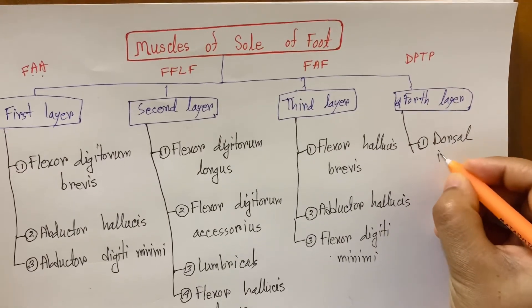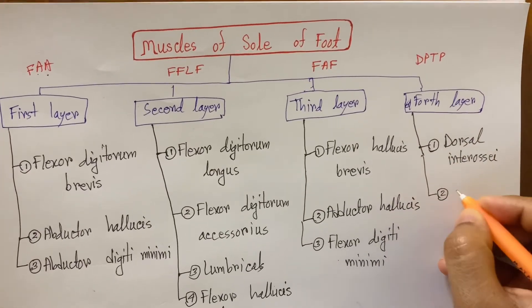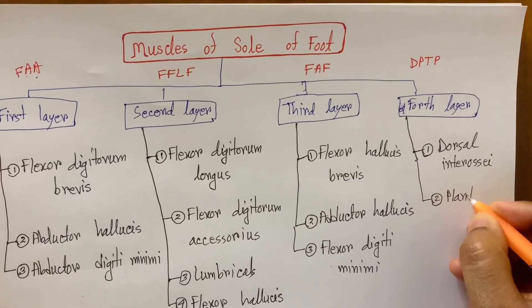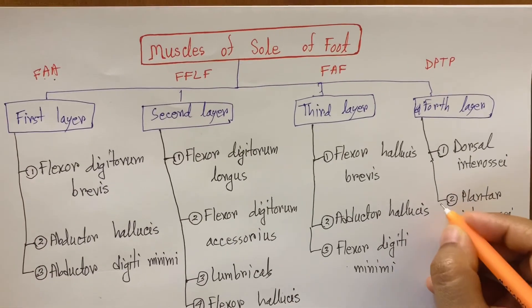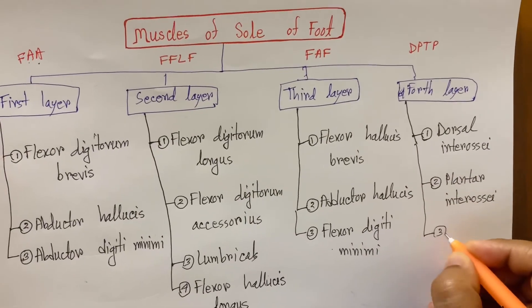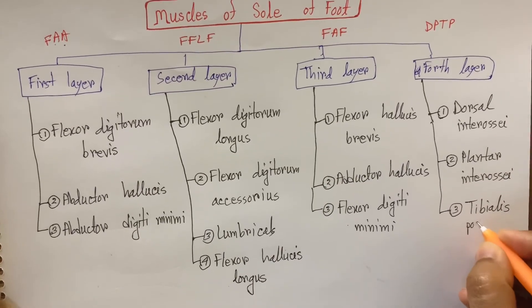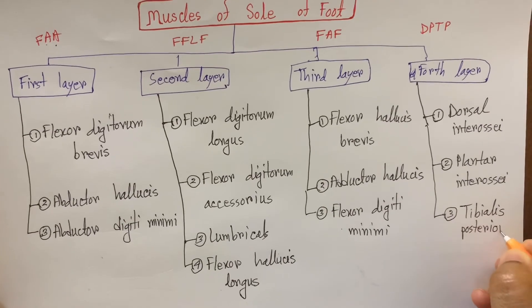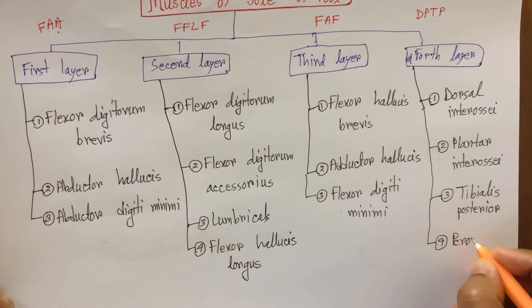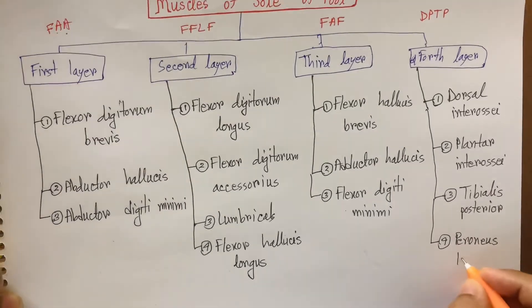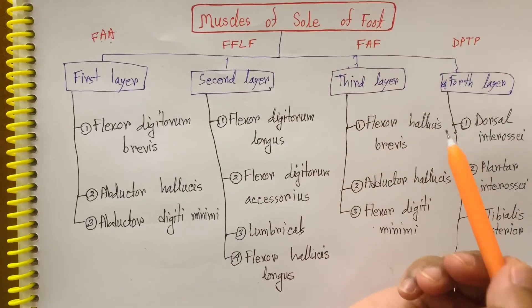Finally, let's see fourth layer muscles. Dorsal interossei, plantar interossei, tibialis posterior, and fourth one peroneus longus. These are our muscles of sole of foot.